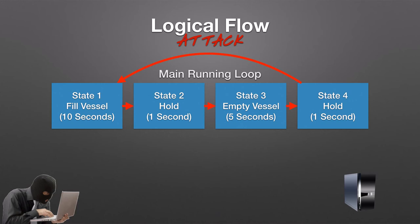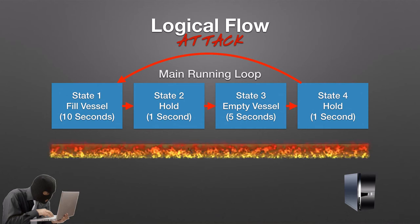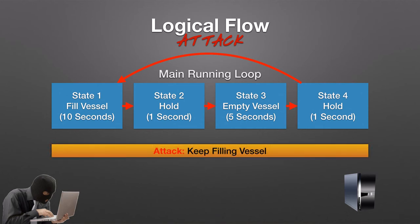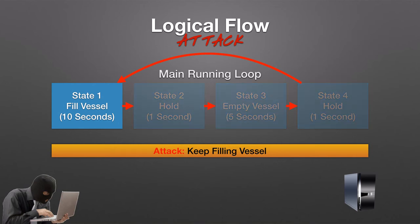Because Chainsaw is able to see all sides of the communication that occur in this network, it is able to compare commands from both the attacker and the legitimate controller. As the attacker sends a stream of commands forcing the system to continue filling the vessel, Chainsaw performs an analysis of the current state and the traffic being observed.